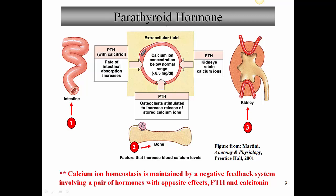Parathyroid hormone exerts action at three different sites. One is at the intestine, where it increases the absorption of calcium. Another site is bone, where it stimulates osteoclasts to reabsorb bone - when osteoclasts break down bone, the calcium salts are released and absorbed into the blood. Lastly, parathyroid hormone can increase retention of calcium ions at the kidney by decreasing the amount of calcium excreted in the urine, helping the body retain more calcium.